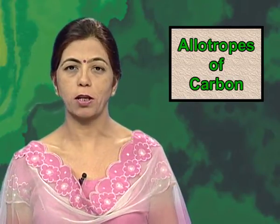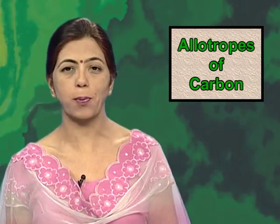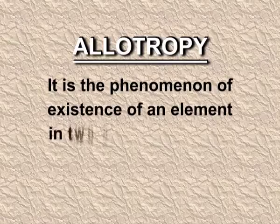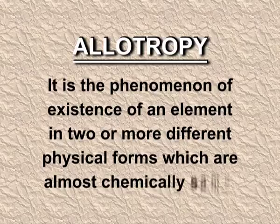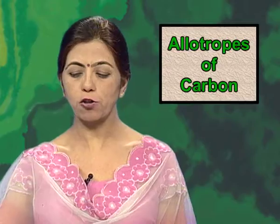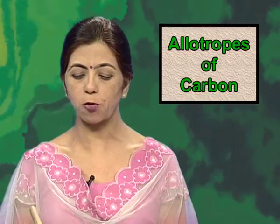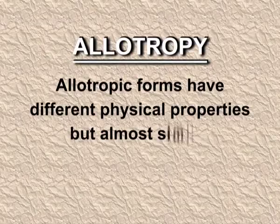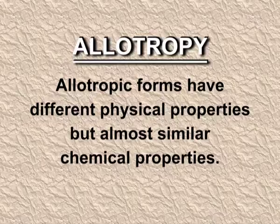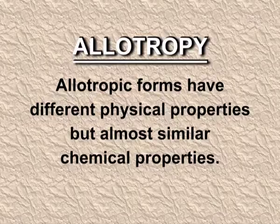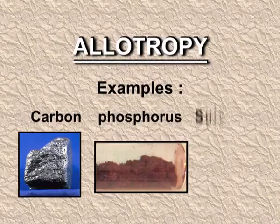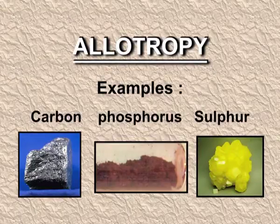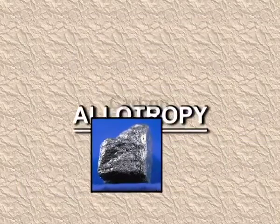Now what is allotropy? Allotropy is the phenomenon of existence of an element in two or more different physical forms which are almost chemically the same. Allotropic forms have different physical properties but almost similar chemical properties. Many elements show allotropy, but the most common examples are carbon, phosphorus, and sulfur. Today we will deal with the allotropic forms of carbon.